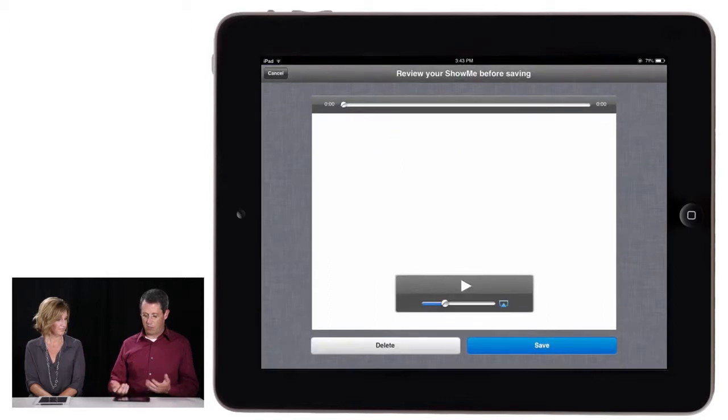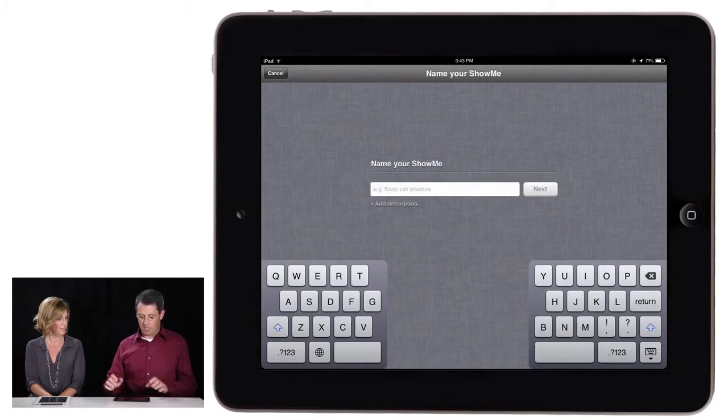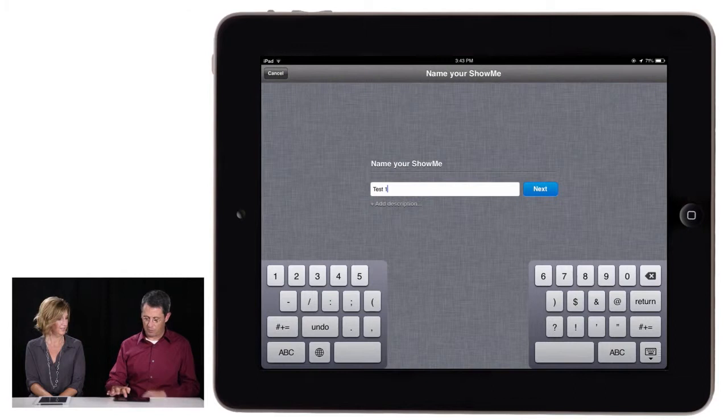Yeah, it's really nice. I click Save ShowMe. It's going to go ahead and once I'm done here, I can preview it. I'm going to click Save. I can name it here. Okay. And for this case, I'm going to call it Test One just for simplicity. Okay, great.